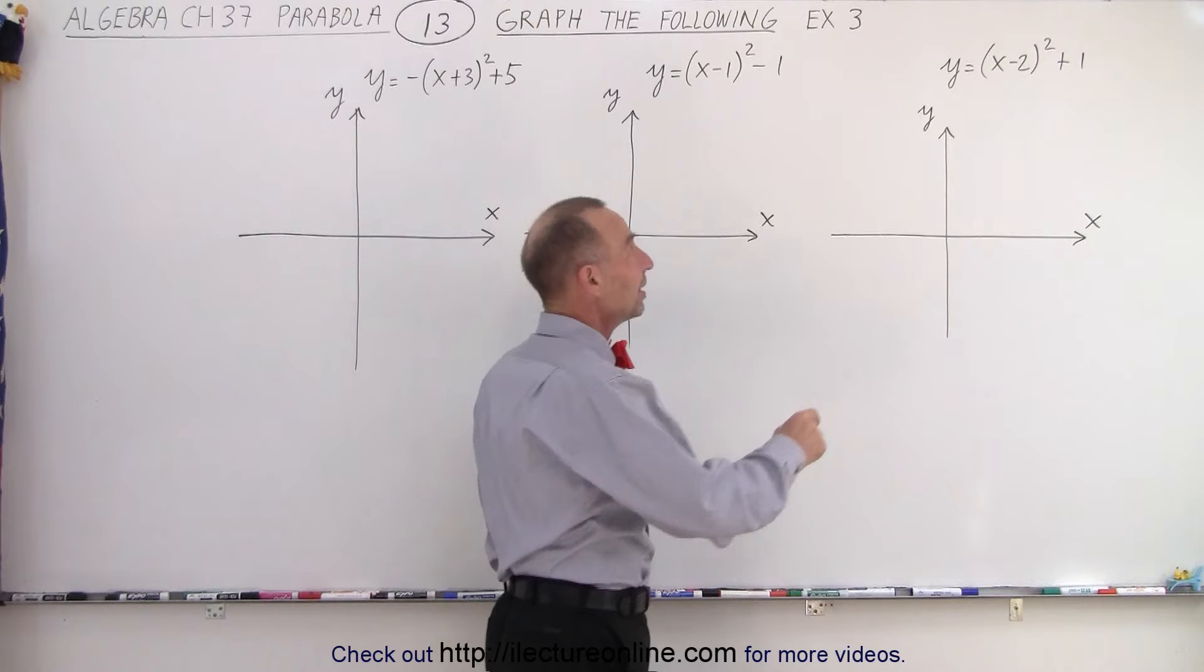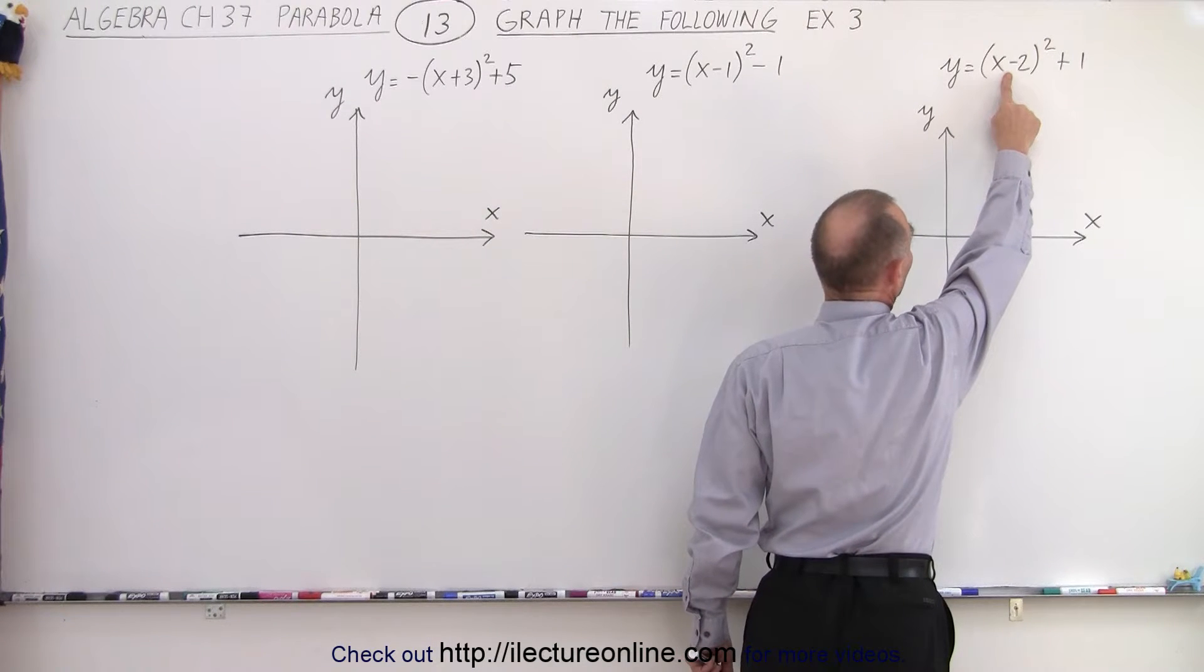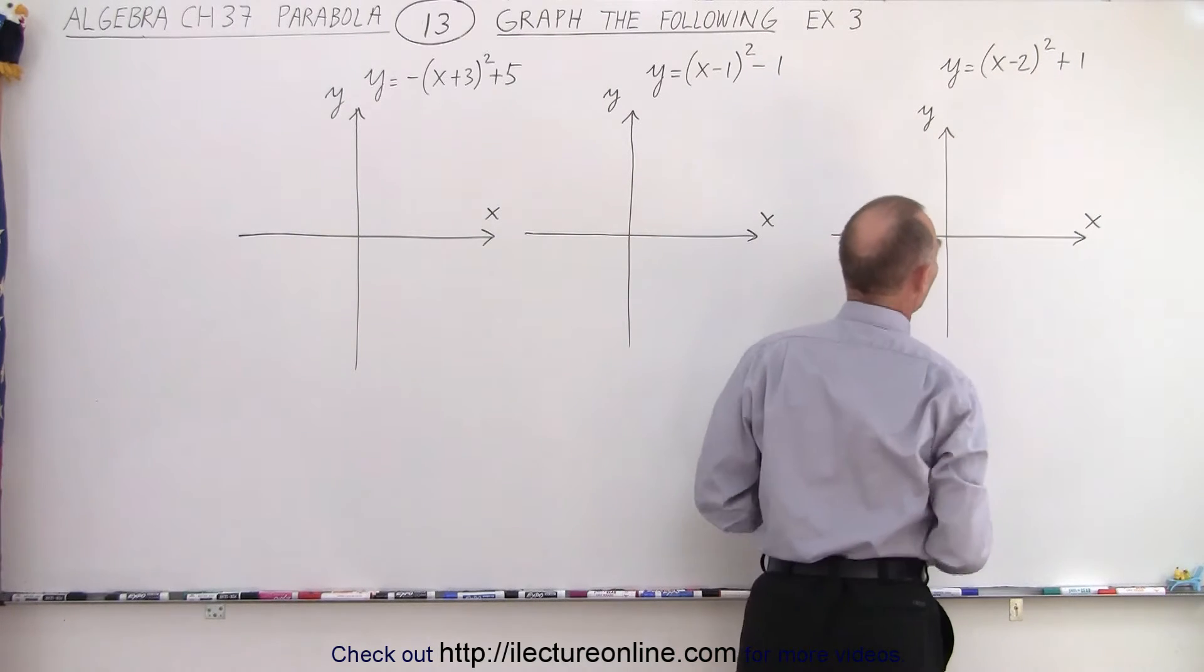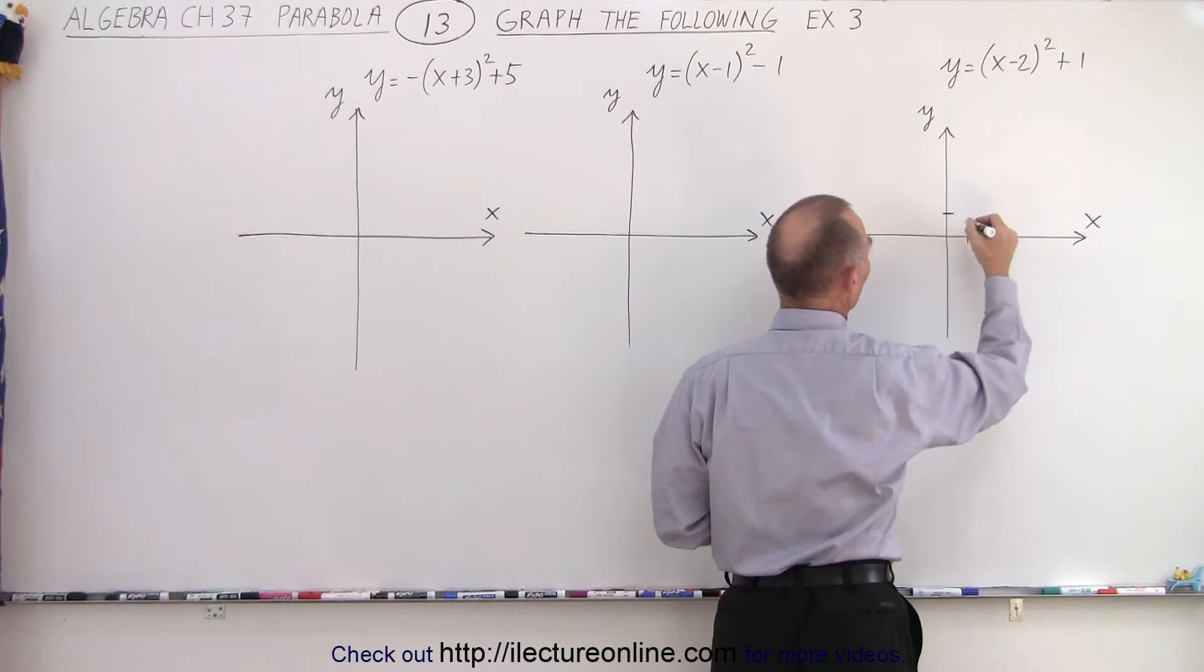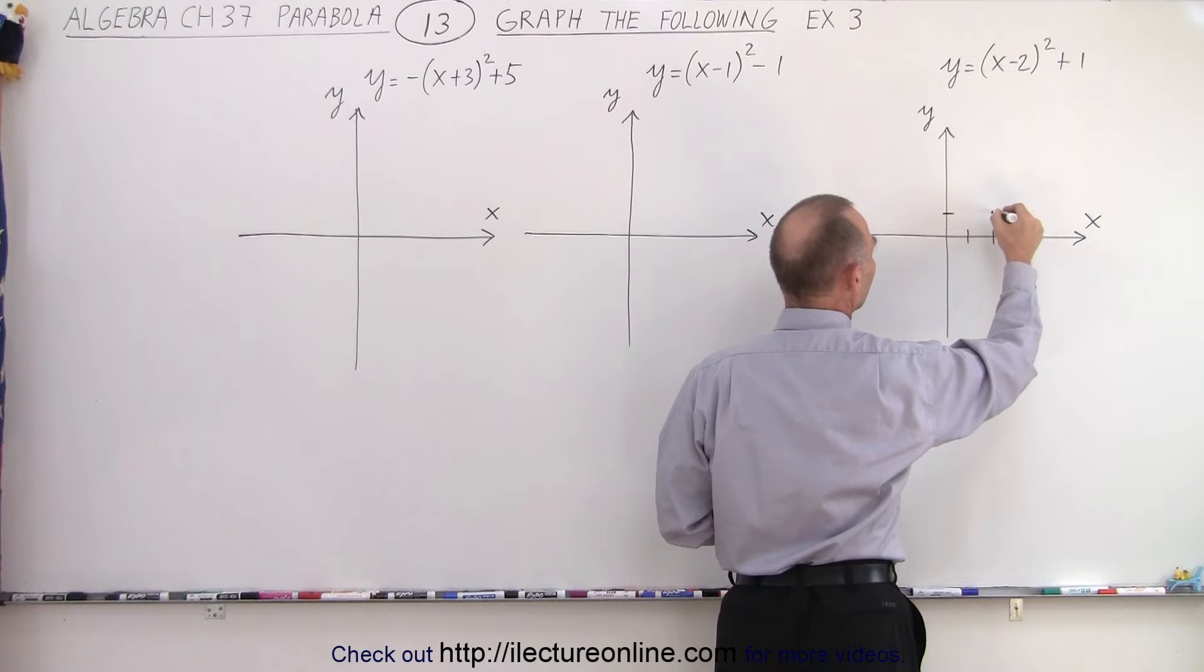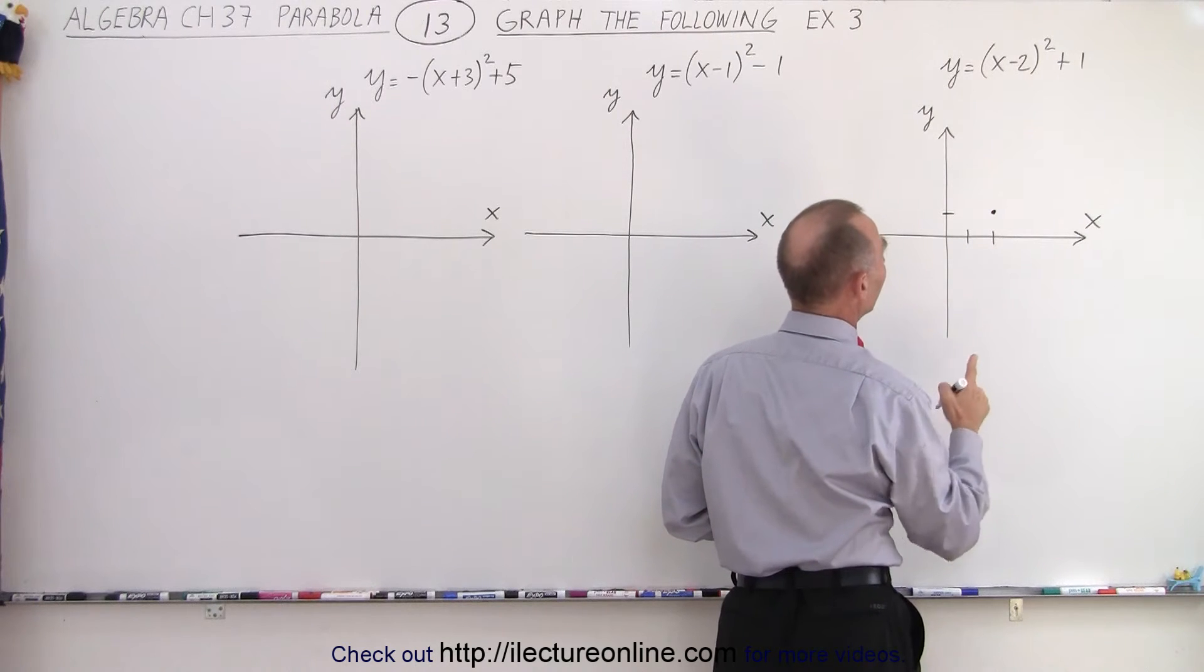Here you can see that the parabola will be shifted to the right by two units, and shifted up by one unit. So to the right by two units, one, two, up by one. Where these two come together, that will be where the vertex is.